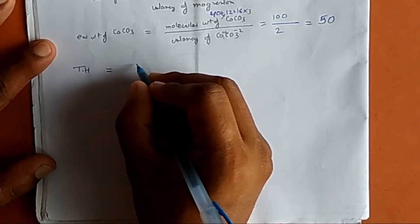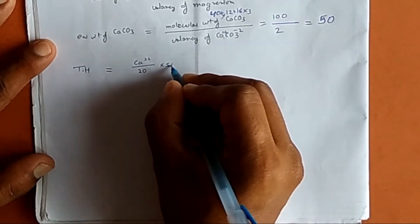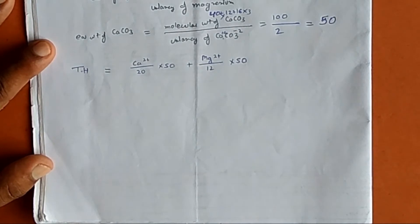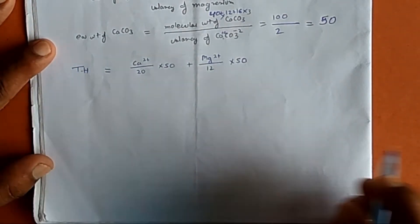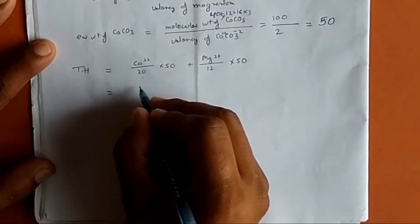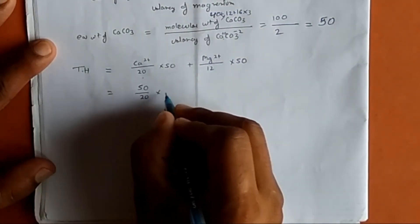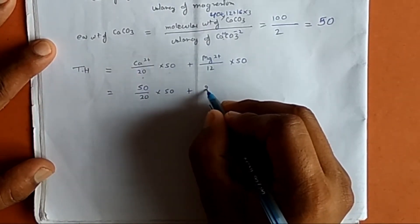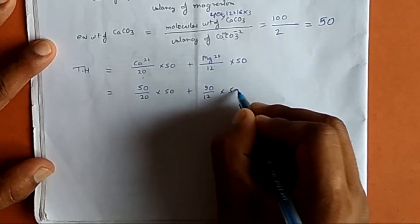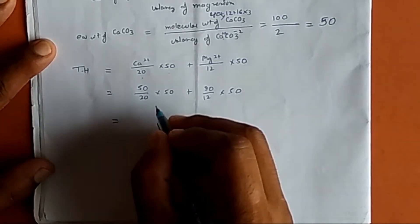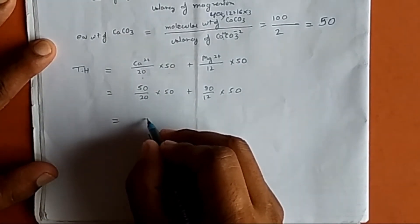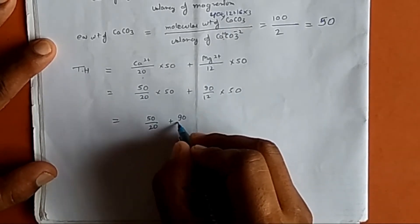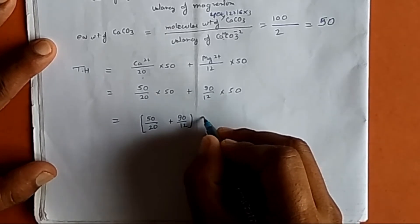So total hardness equals concentration of calcium ions divided by 20, multiplied by 50, plus concentration of magnesium ions divided by 12, multiplied by 50. Putting in the values: calcium ion concentration was 50 mg per litre, so 50/20 × 50, plus magnesium ion concentration of 90 mg per litre, so 90/12 × 50. Resolving, this becomes (50/20 + 90/12) × 50.